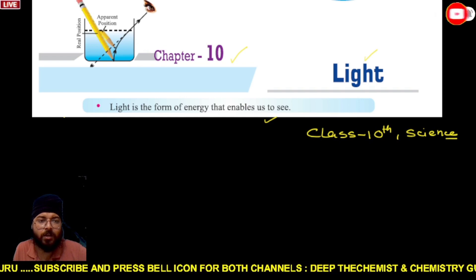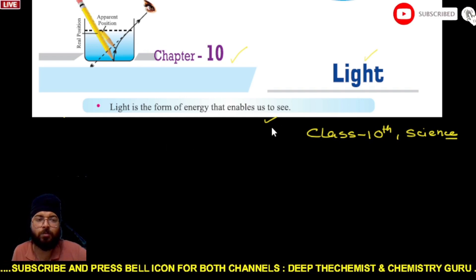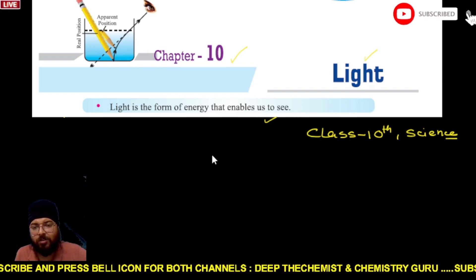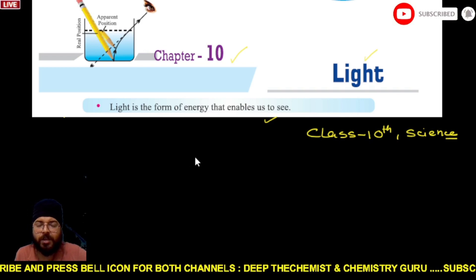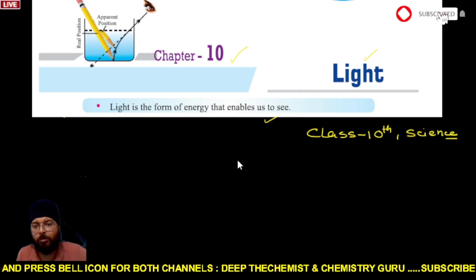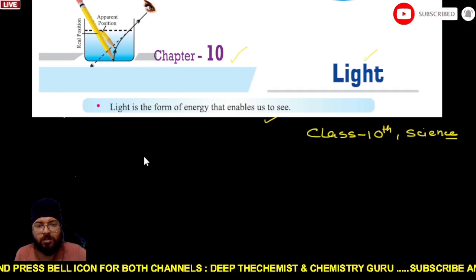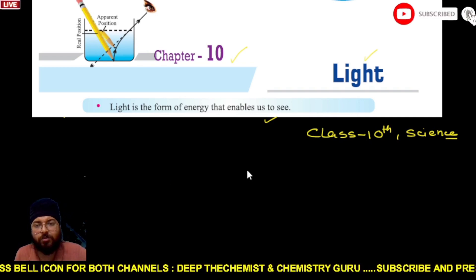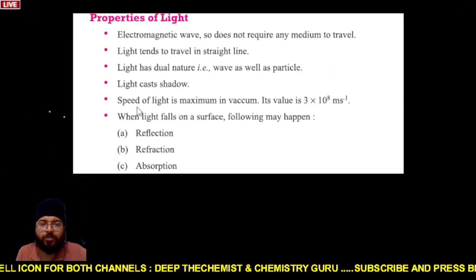This is the chapter on light. First of all, we will discuss the properties of light — what are the characteristics and reflection of light. This topic covers image formation by the plane mirror.